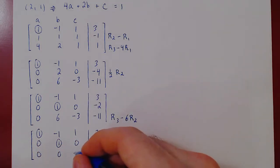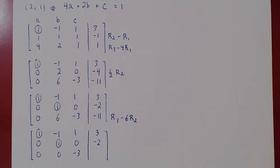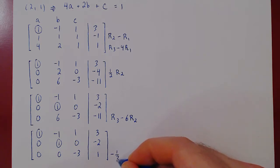Negative three minus zero, negative three. Negative eleven minus six times negative two is positive twelve, which gives us positive one. We can obtain our third leading one by multiplying row three by negative one third.